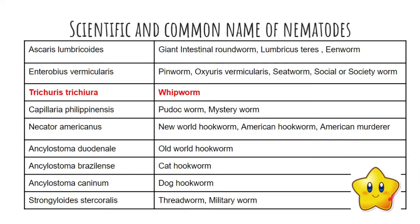Don't forget, we need to memorize again the scientific and common names of our nematodes. So far, we are done with Ascaris, which is otherwise known as the giant intestinal roundworm. We also discussed Enterobius vermicularis, which is the pinworm or the seatworm. We also discussed Trichuris trichiura, which is a board exam recall question and is otherwise known as the whipworm.